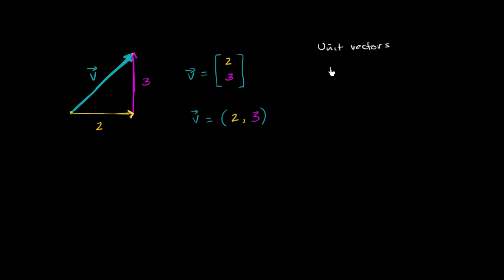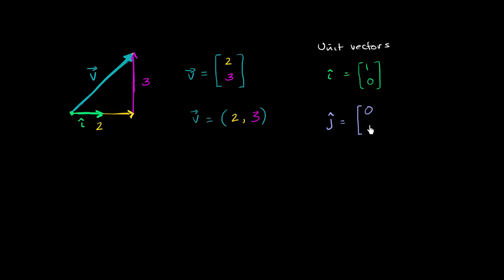So let's define a unit vector î. The way that we denote that it is a unit vector is instead of putting an arrow on top, we put this kind of hat on top of it. The unit vector î, written in this notation, only goes one unit in the horizontal direction and doesn't go at all in the vertical direction — it would look something like that. And then we can define another unit vector, typically called ĵ, which goes only one unit in the vertical direction and not in the horizontal direction.